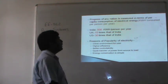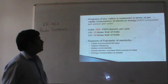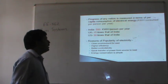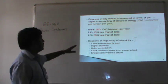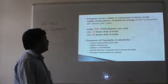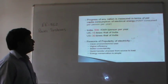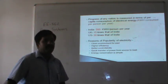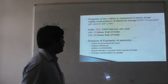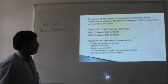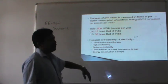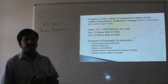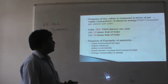The progress of any nation is measured in terms of per capita consumption of electrical energy, that is kWh consumed per person per year. kWh is the unit of electrical energy. India's per capita consumption is 500 units or 500 kWh per person per year, as compared to the UK where consumption is 15 times that of India, and the US which is 30 times that of India.